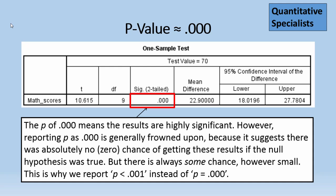The p of .000 again means that the results are highly significant. However, reporting p as .000 is generally frowned upon because it suggests there was absolutely no or zero chance of getting the results if the null hypothesis was true. But there is always some chance of getting the results if the null is true, however small or unlikely the chance may be.